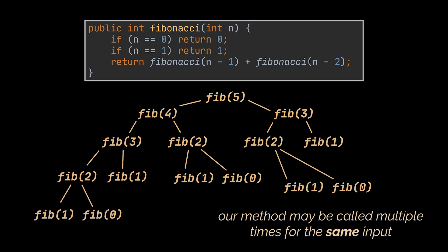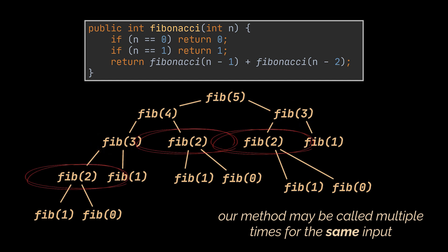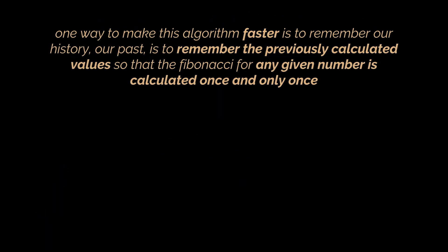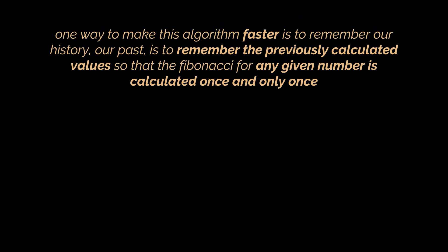Notice how our method may be called multiple times for the same input. For example, to retrieve the Fibonacci of 5, we'll need to retrieve the Fibonacci of 4 and 3. However, to retrieve the Fibonacci of 4 we'll need to recalculate the Fibonacci of 3 again, even though we just calculated it. This gets even worse as the number we pass to the method becomes bigger.